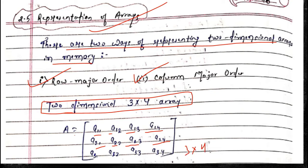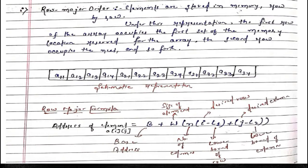Now we will learn what row-major order is. In row-major order, elements are stored in memory row by row. So we write all the elements of an array row by row.